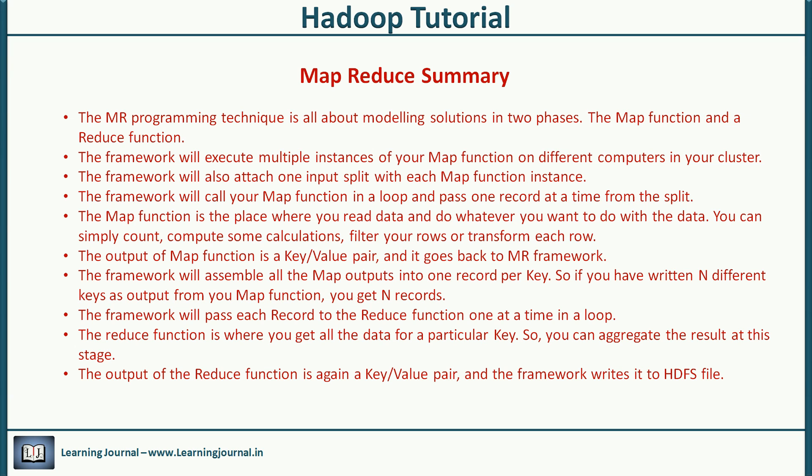We covered a lot of things. Let me quickly summarize the key takeaways. The MapReduce programming technique is all about modeling solutions in two phases: the map function and a reduce function. The framework will execute multiple instances of your map function on different computers in your cluster. The framework will also attach one input split with each map function instance. The framework will call your map function in a loop and pass one record at a time from the split. The map function is where you read data and do whatever you want - count, compute calculations, filter rows, or transform each row. We'll see examples in the next video. The output of the map function is a key-value pair and it goes back to the MapReduce framework.